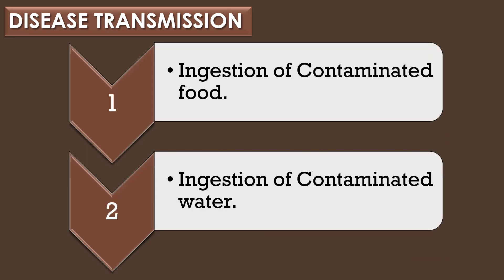Transmission of Vibrio cholerae: Vibrio cholerae infections are mainly transmitted by two modes. The first mode is ingestion of contaminated food, and the second mode is ingestion of contaminated water.